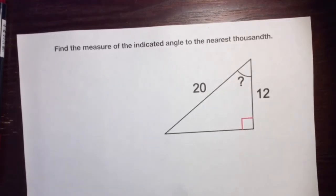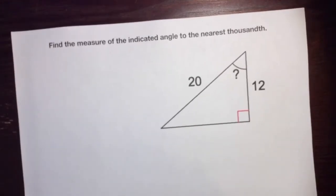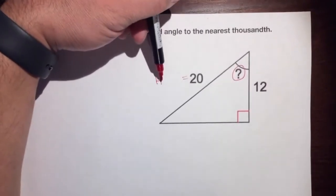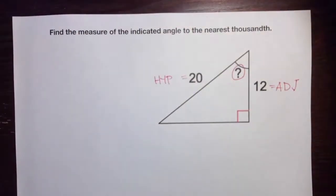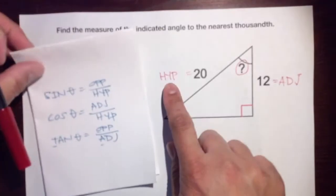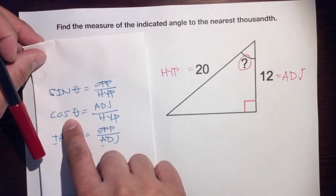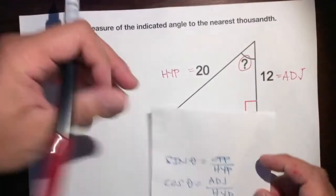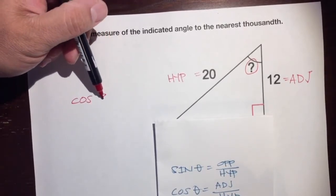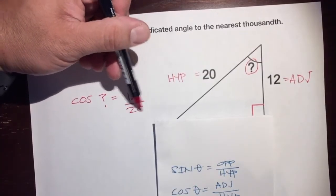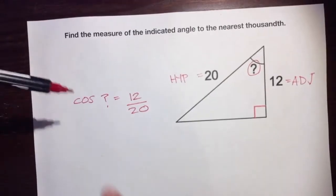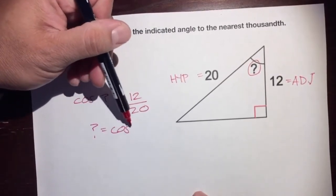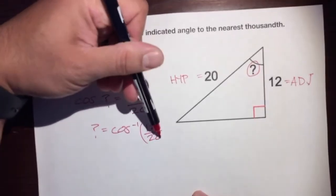Last example: find the measure of the indicated angle. We're looking for this angle and we have the adjacent side and the hypotenuse — adjacent over hypotenuse means we use cosine. So: cosine of the question mark equals the adjacent (12) over the hypotenuse (20). To get the question mark by itself, we use inverse cosine, giving us: question mark equals the inverse cosine of 12 over 20.